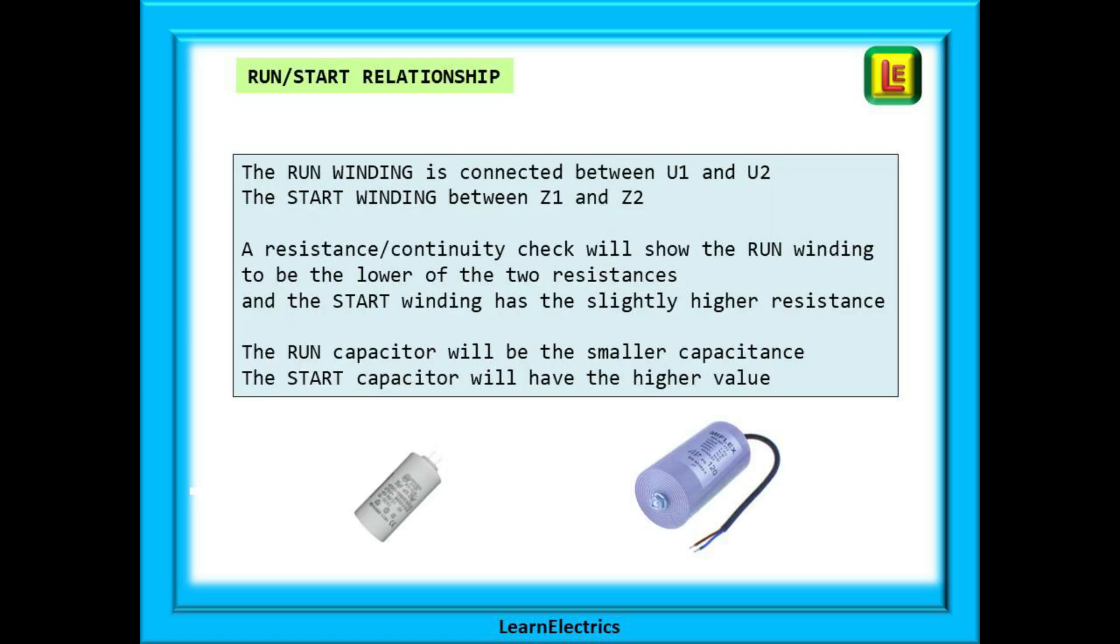In general the run winding should be connected between U1 and U2 and the start winding between Z1 and Z2. A resistance or continuity check will show the run winding to be the lower of the two resistances and the start winding will have the slightly higher resistance. In both cases we are only talking about a few ohms for either winding. They will be low resistances.